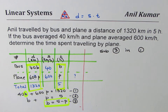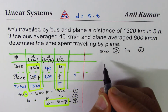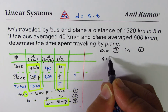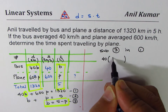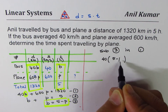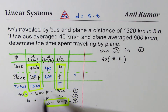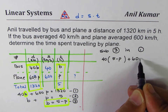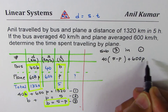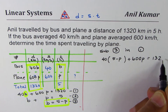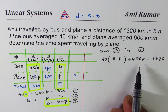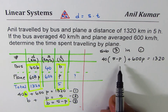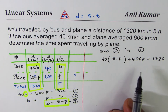Substituting, we can write this as 40 times (5 minus P) plus 600P equals 1320. Now we have an equation in only one variable — you can always open the brackets and solve.